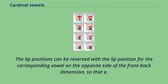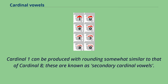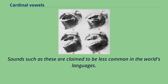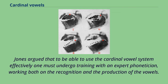The lip positions can be reversed, with the lip position for the corresponding vowel on the opposite side of the front-back dimension, so that cardinal one can be produced with rounding somewhat similar to that of cardinal eight. These are known as secondary cardinal vowels. Such sounds are claimed to be less common in the world's languages, and other vowel sounds are also recognized on the vowel chart of the International Phonetic Alphabet.